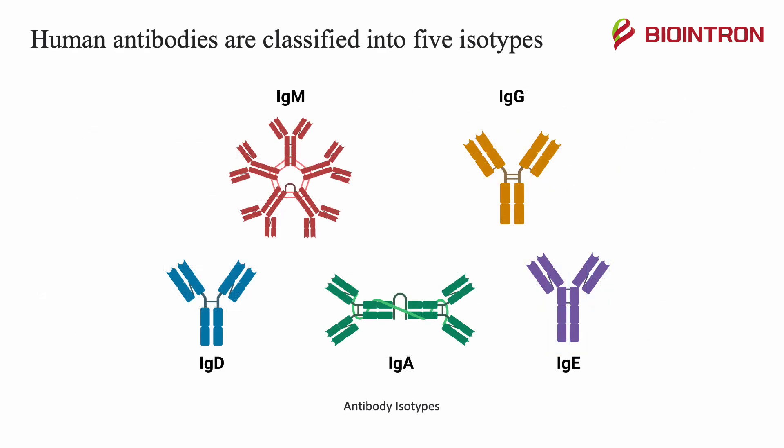Antibodies are classified into five isotypes — IgG, IgA, IgD, IgE, and IgM — based on the constant domains in their heavy chains, which give each isotype their different characteristics. They can be further classified into subtypes.